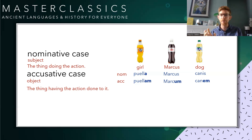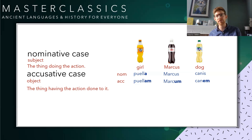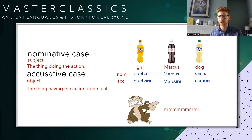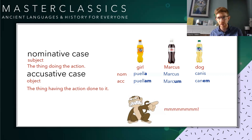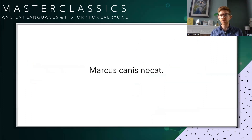Dog is a third declension noun — I've gone with Lilt for that, because not everybody likes it and it has to be in the right mood. Third declension nouns are a bit weird: their nominative form can end in almost anything. But they do share the accusative ending in 'm'. The accusative — the case for the thing having the action done to it — ends in an 'm' sound. Think of accusing someone: 'mmm!' If you see that 'm' at the end of a noun, it's very likely having the action done to it.